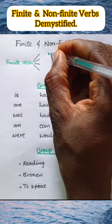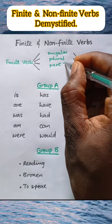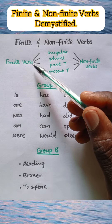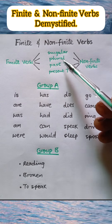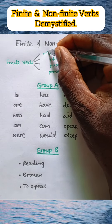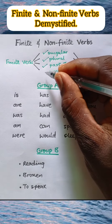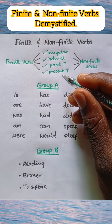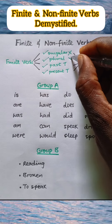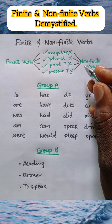Take a look at this. We have singular, plural, past tense, and present tense. A finite verb is a verb that can exist in the singular or plural form, past tense or present tense. So any verb that you can classify as either singular or plural, as either past tense or present tense, such a verb is a finite verb. On the other hand, a verb that cannot be classified as singular or plural, as past tense or present tense, is a non-finite verb.